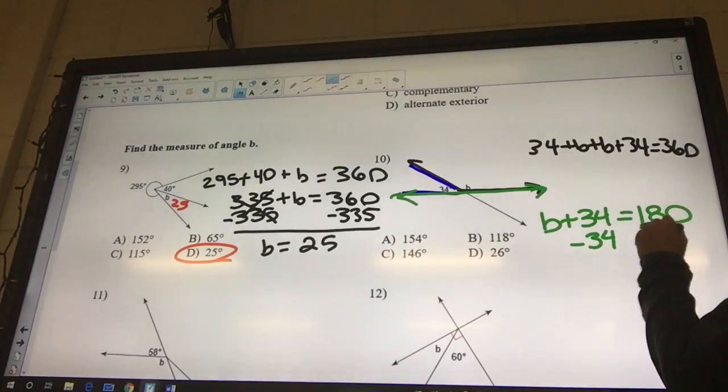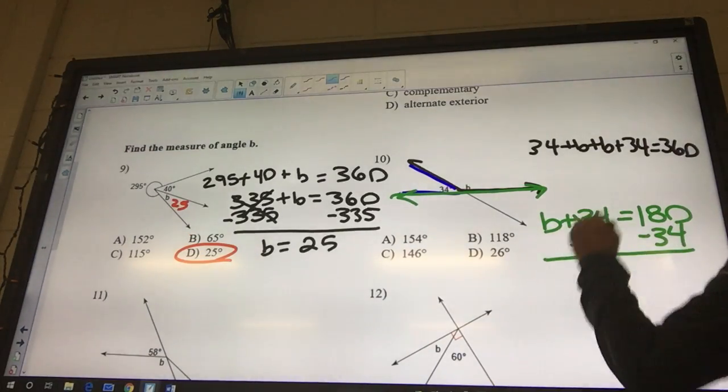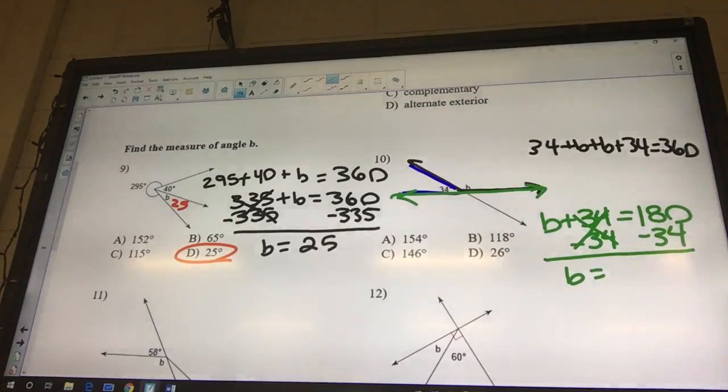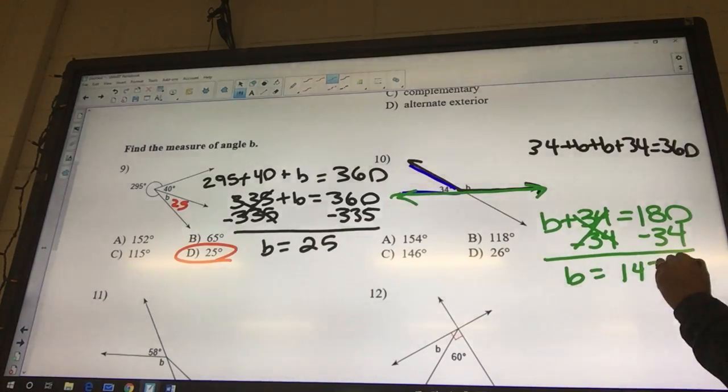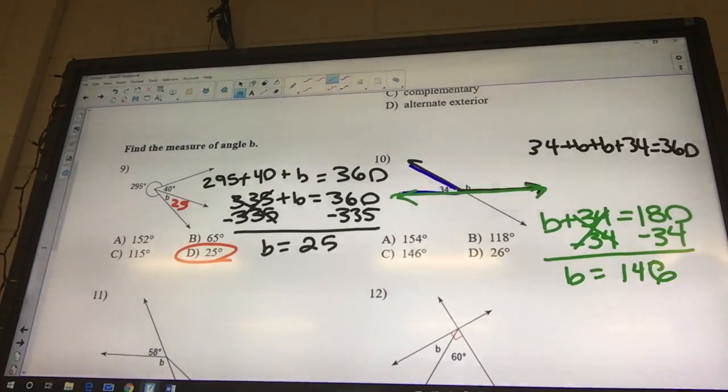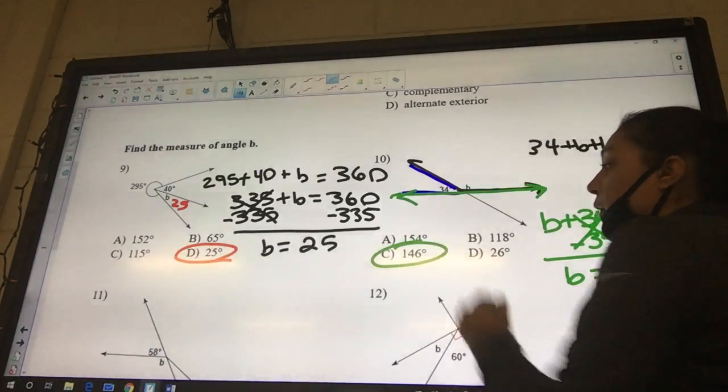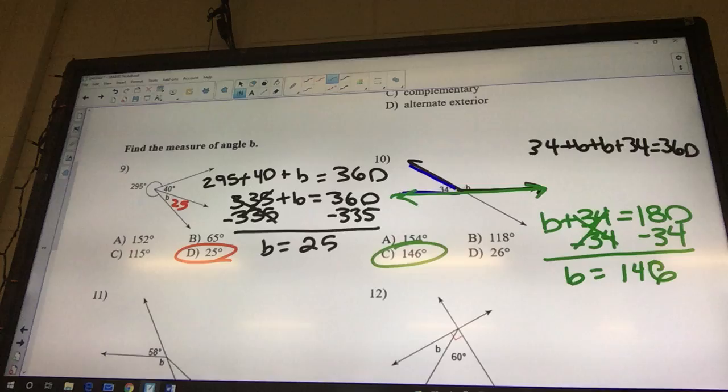We have to minus 34 from both sides. 146. Does this make any sense of what I'm saying or not? I need you guys to tell me. Yeah. I think I'm getting it so far. Okay.